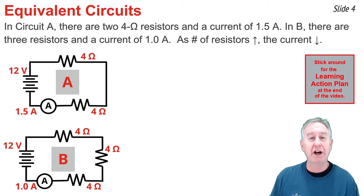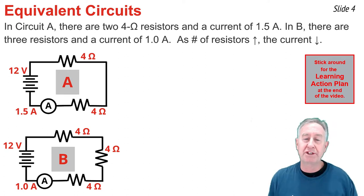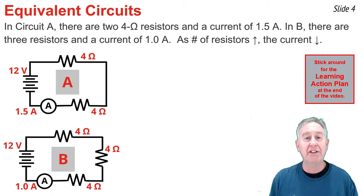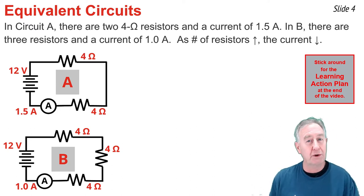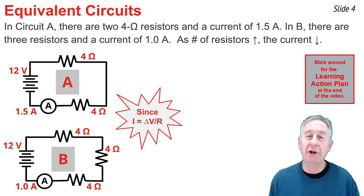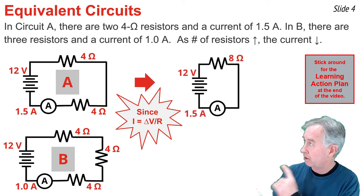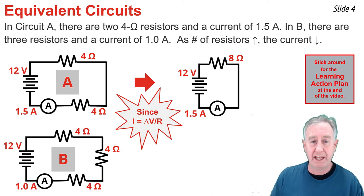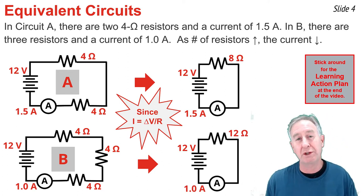In schematic diagram A, there are two 4-ohm resistors. There's also a new circuit symbol — a circle with an A inside of it — that represents an ammeter, and at its location it's measuring the current within the circuit, which is 1.5 amps in circuit A. In circuit B, we have three 4-ohm resistors, and the ammeter in that circuit is measuring a current of 1.0 amps. Adding that additional resistor in circuit B causes the current to decrease.